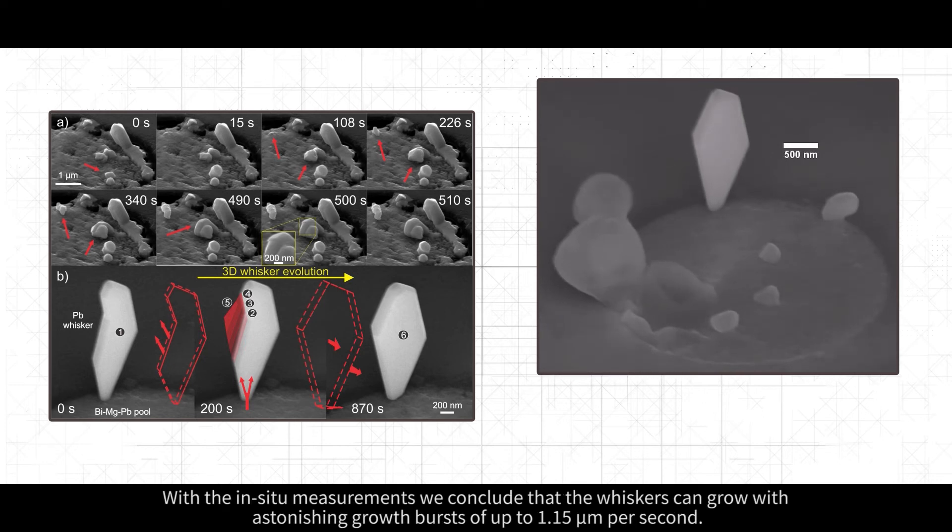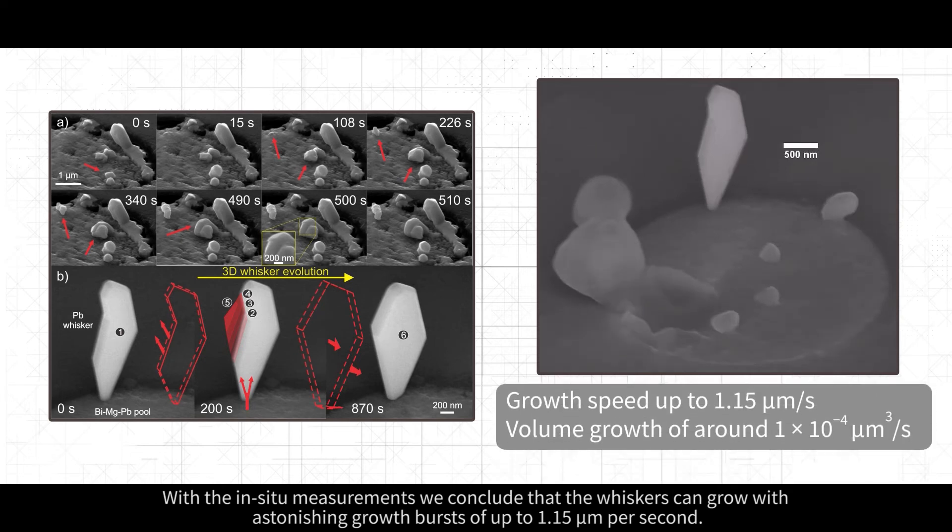With the in-situ measurements, we conclude that the whiskers can grow with astonishing growth bursts of up to 1.15 micrometers per second.